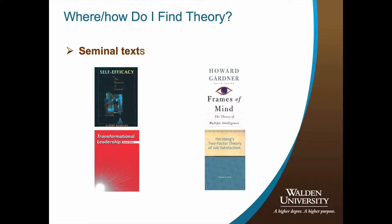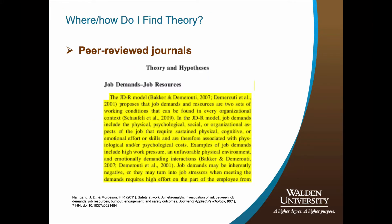Applicable theories can be found in seminal texts or peer-reviewed literature. For example, Bandura's self-efficacy theory was introduced in his text titled Self-Efficacy: The Exercise of Control. Likewise, the theory of multiple intelligences was introduced by Dr. Howard Gardner in his seminal text titled Frames of Mind: The Theory of Multiple Intelligences. You would also be able to locate peer-reviewed literature addressing these theories. This slide depicts the job demands-job resources theory located in a peer-reviewed journal. Again, peer-reviewed journals are excellent sources for identifying theories.